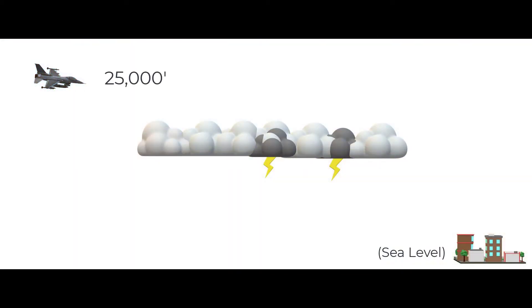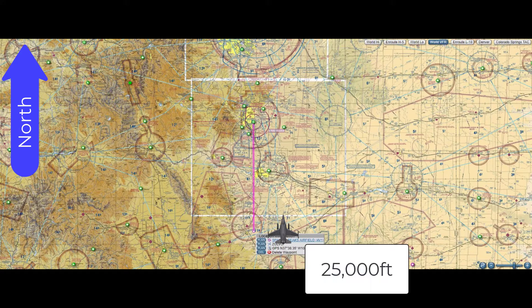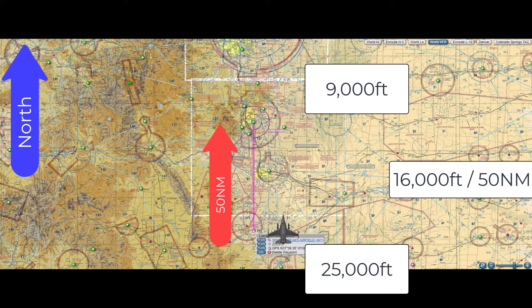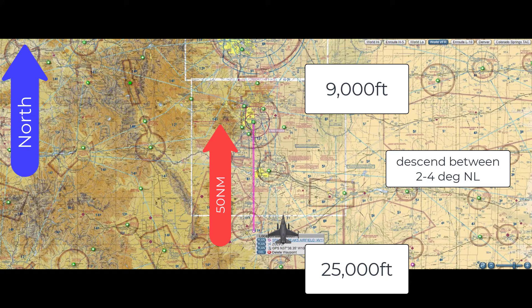You're typically not going to descend from the flight levels straight into landing — you'll probably need to shoot an instrument approach. So instead of descending from 25,000 feet down to zero, we're descending down to our final approach fix altitude. Say you're at 25,000 feet, 50 miles from Sea Springs airport, shooting the ILS-17. The FAF altitude is 8,700 feet — call it 9,000 for easy math. That's about 16,000 feet to lose in 50 miles. One-fifth is 2 degrees nose low, two-fifths is 4 degrees, so a good efficient descent is around 3 degrees nose low to reach FAF altitude from 50 miles out.